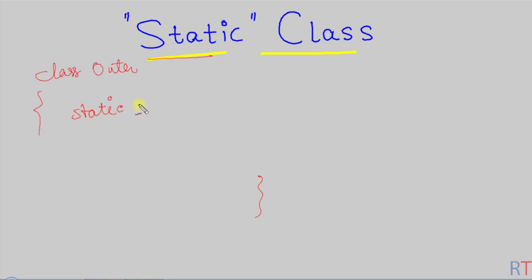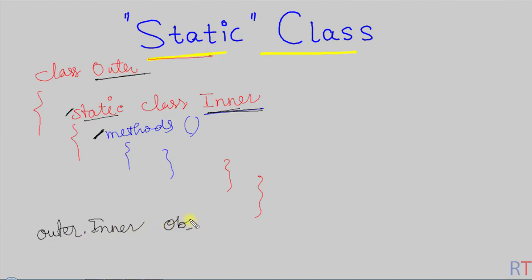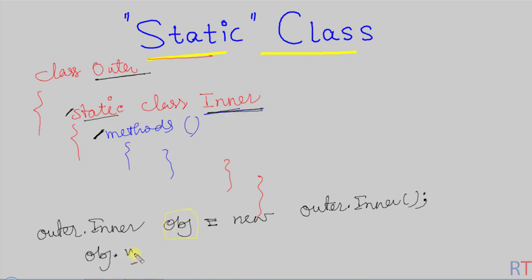We write the static keyword, then the class keyword, and then the name of the class — I am going to call it inner. The inner class can have its own member methods. To access those methods we have to create an object of the inner class, and to do that we write outer.inner as the type, then the object name, then call the constructor using new outer.inner.